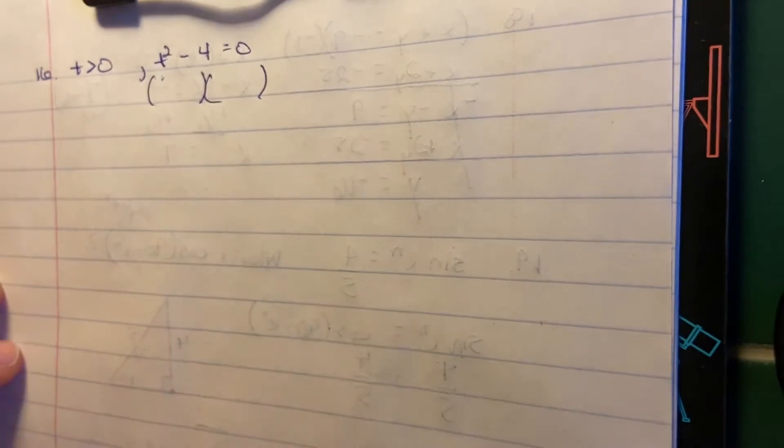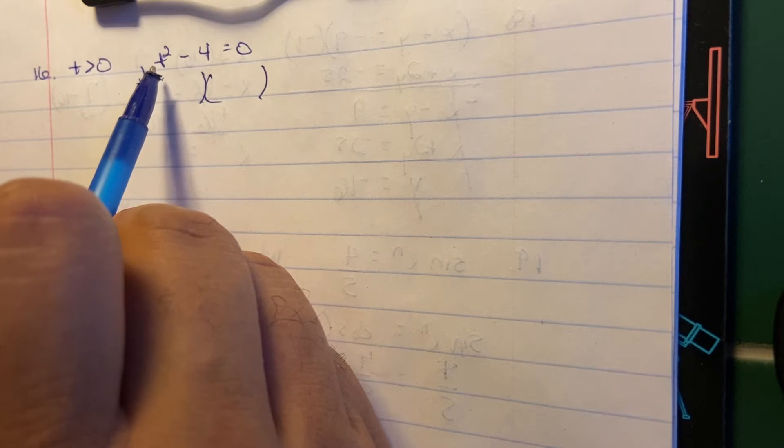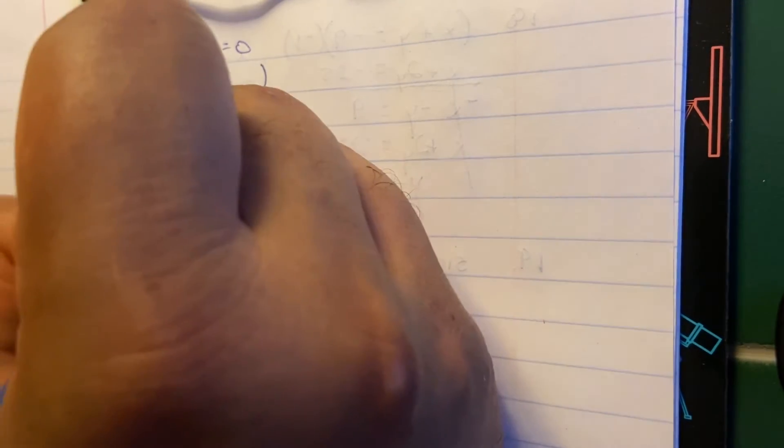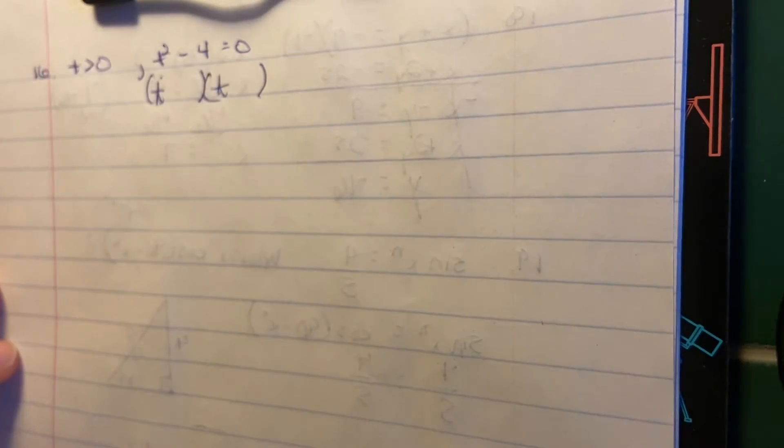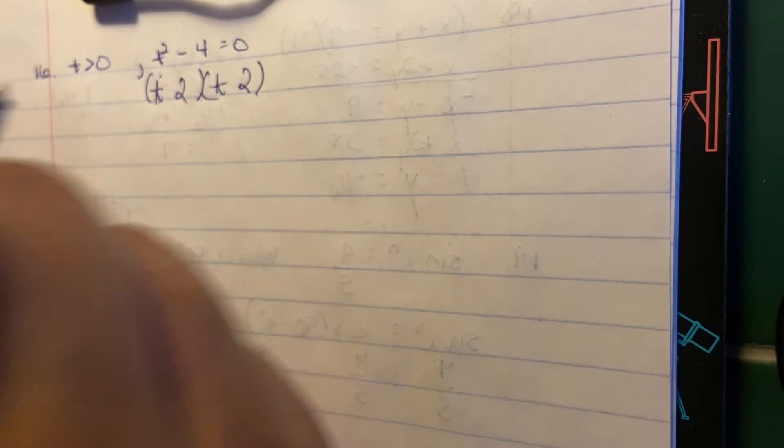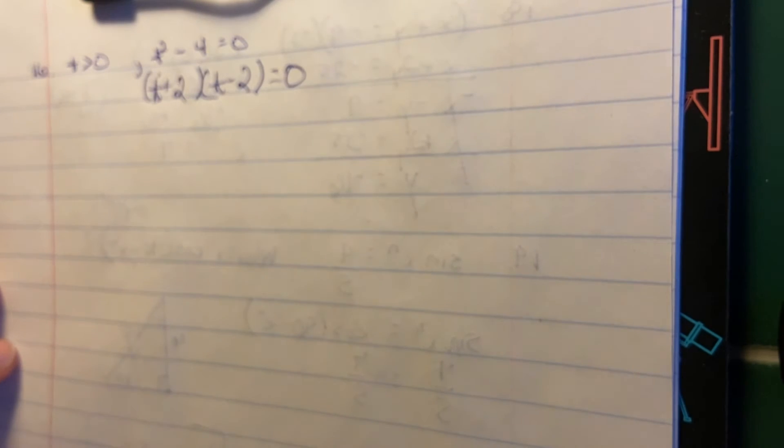You create two binomials. I just draw the parentheses first, and then I take the square root of t², which is t, because t times t equals t². I take that t and I write one in the first parentheses in the first space, and I write one in the second parentheses in the first space. Then I take the square root of the second term, which is four. The square root of four is two. I put a two in the second space in the first parentheses and a two in the second space in the second parentheses. Then I put a plus sign in one set of parentheses and a minus sign in the other set of parentheses. That's how you factor using the difference of two squares method.